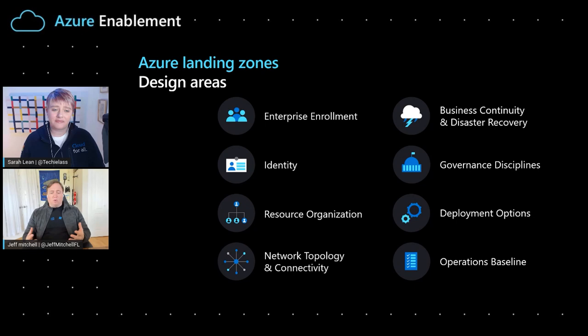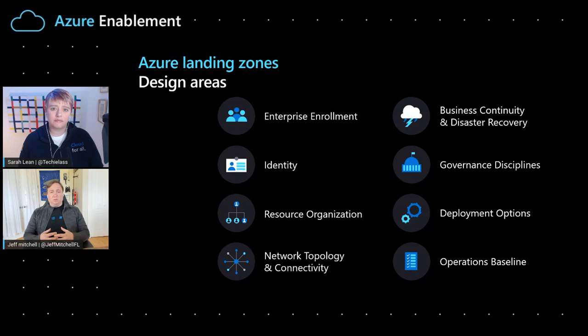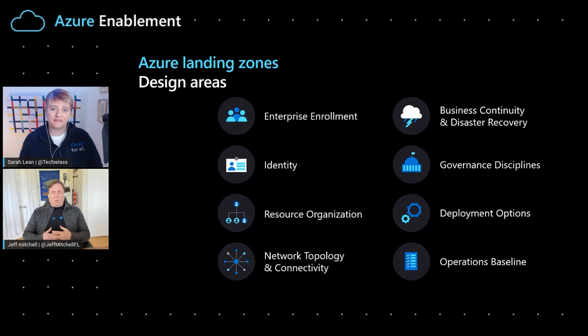The first one is enterprise enrollment, which represents the billing mechanism — the alignment from a billing standpoint of their relationship with Microsoft. Then we have identity, which is about IAM — the access controls that you would need in the cloud to securely operate those workloads. Resource organization is the construct of how you organize things like subscriptions and resource groups within Azure, how you're going to tag things, and how you're going to align them when adopting the service. And how you organize those solutions determines how they're going to connect, whether internally within Azure or externally talking to a headquarters, branch office, or different data centers.